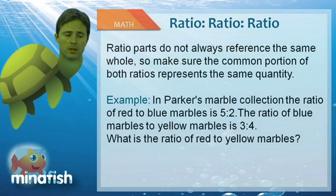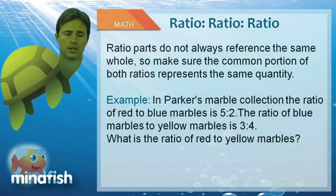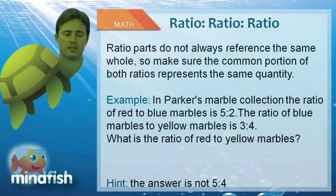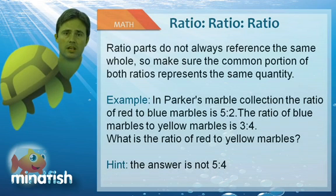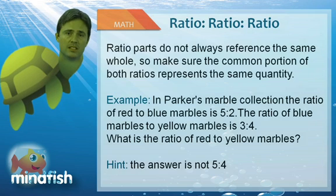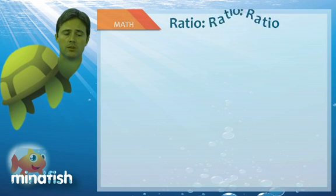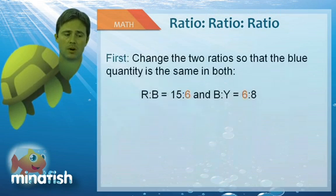So let's see how that works here. If I say in Parker's Marble Collection the ratio of red to blue marbles is 5 to 2, and the ratio of blue marbles to yellow marbles is 3 to 4, what is the ratio of red to yellow marbles? So hint here, the answer is not 5 to 4. If it was, you'd basically be ignoring the 2 and the 3, and basically saying they could be anything. But that's simply not true.